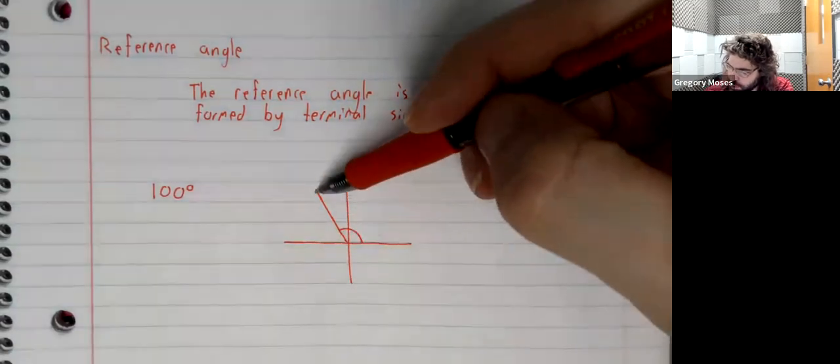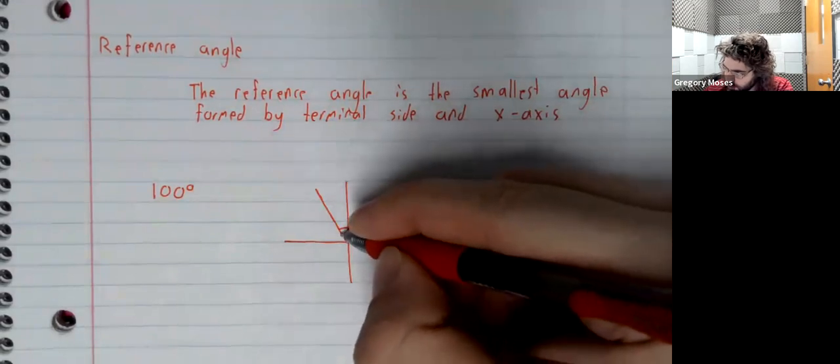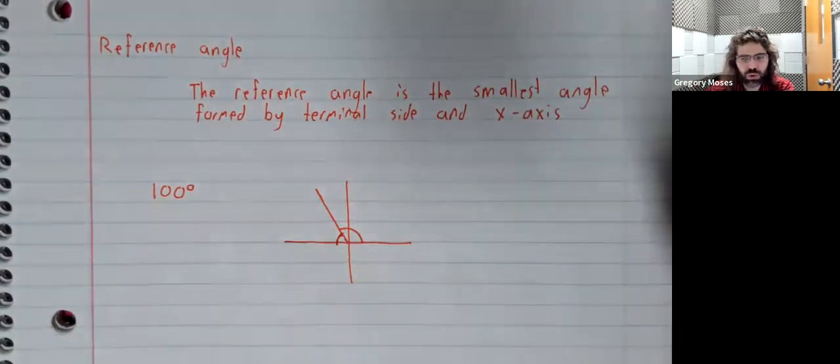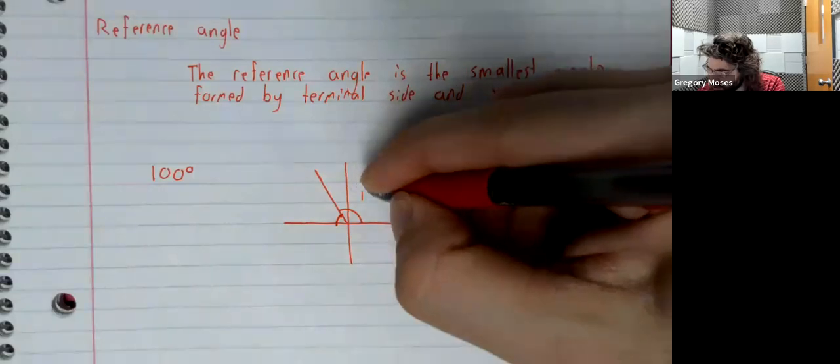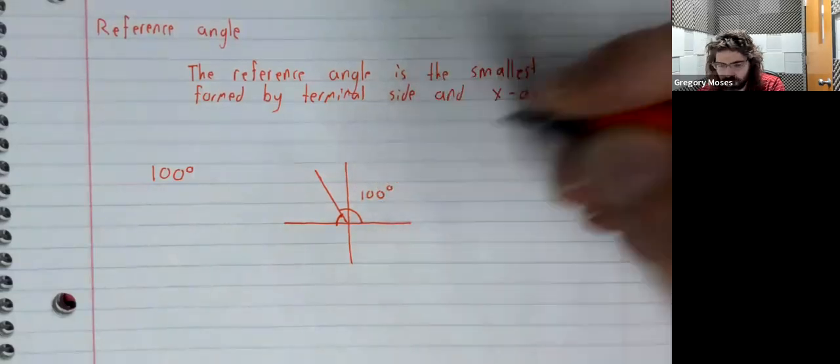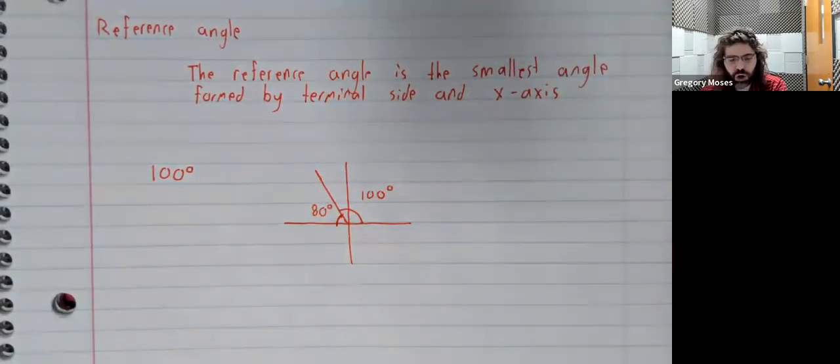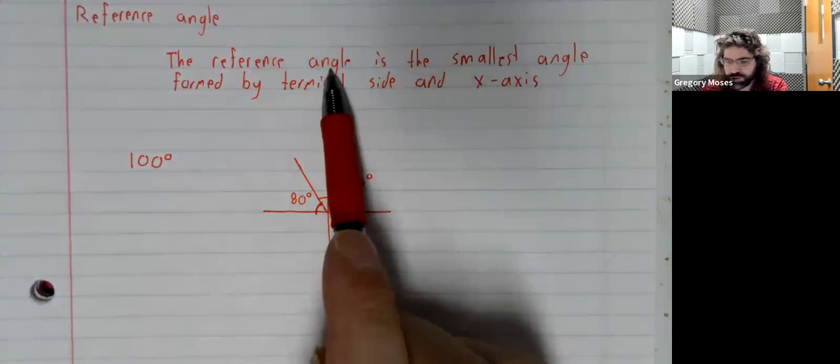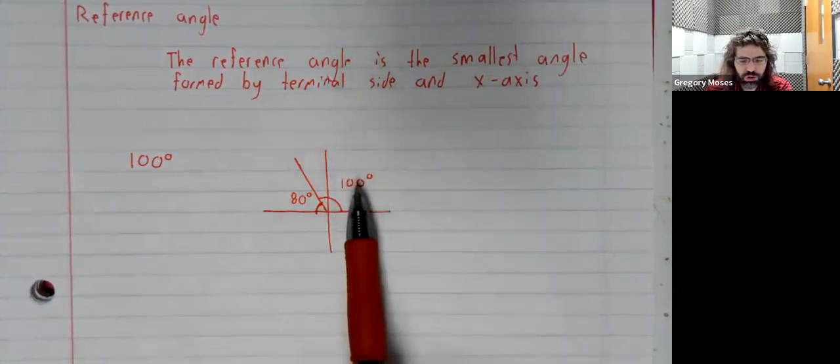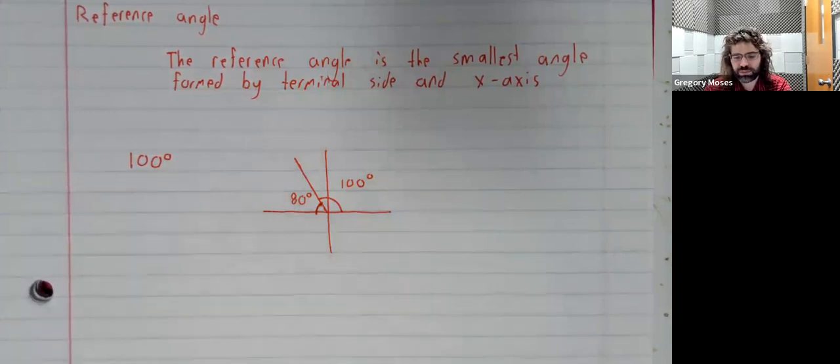But you see that the terminal side of this angle forms another angle with the x-axis. It forms this angle here. And while this bigger angle is 100 degrees, this angle is smaller. This angle is 80 degrees. So, the reference angle of 100 degrees is 80 degrees.